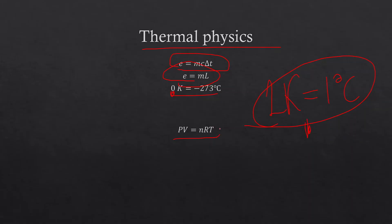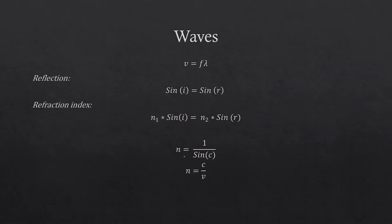PV = nRT — this equation isn't in IGCSE, but it shows that pressure is directly proportional to temperature, volume is directly proportional to temperature, and pressure and volume are inversely proportional to each other. n is the number of moles and R is the molar gas constant.